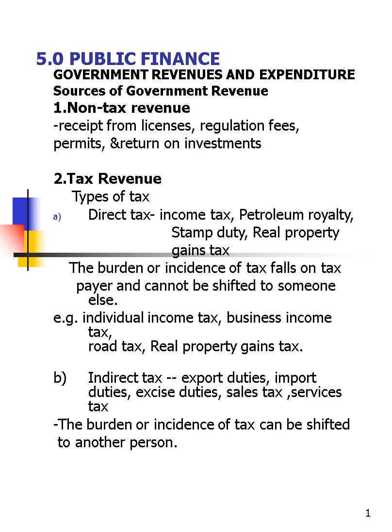The first type is direct tax. As students, you are not paying tax, but once you are working you have to pay — this is what we call direct tax. Examples include income tax, petroleum royalty, stamp duty, and real property gain tax. Direct tax is a tax where the burden or incidence of the tax falls on the taxpayer — you cannot transfer or shift it to somebody else.